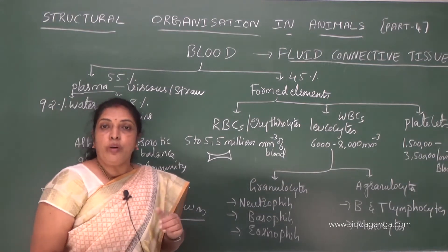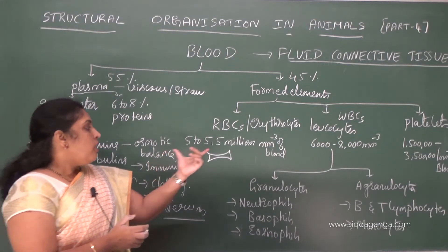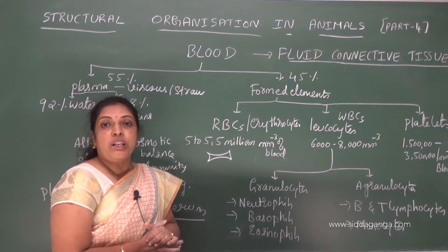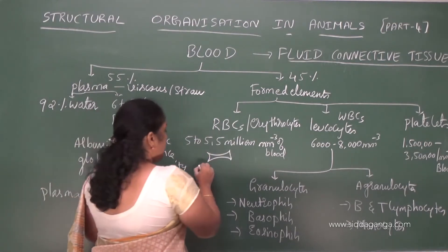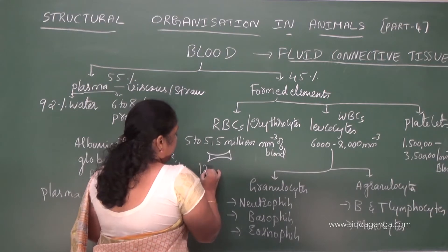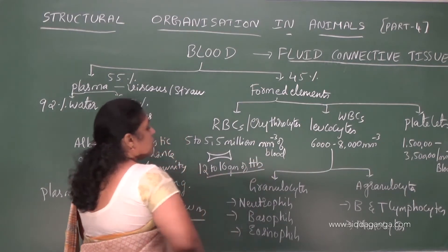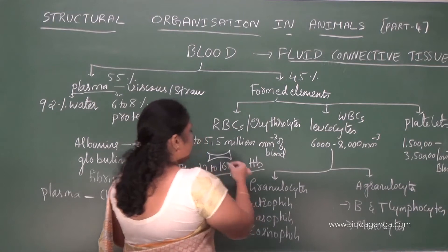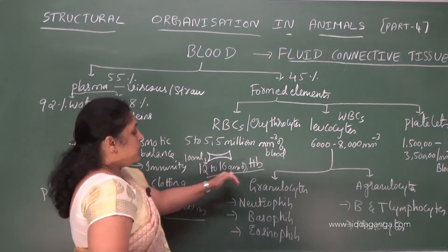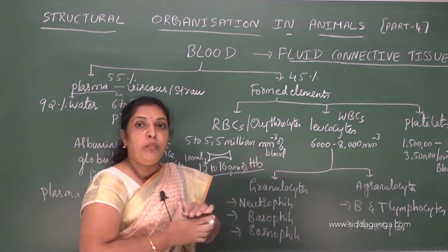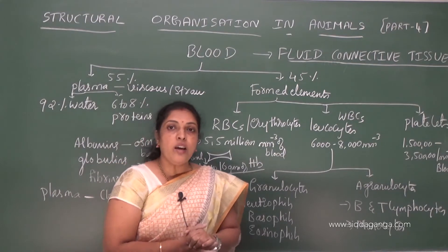Human RBCs are enucleated — absence of nucleus is seen in RBCs. They are biconcave in shape and do not contain any nucleus. 100 ml of blood contains nearly 12 to 16 grams of hemoglobin.